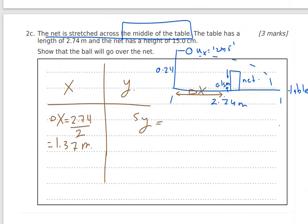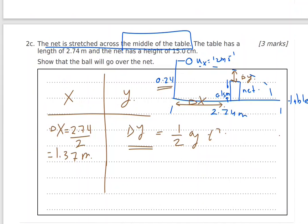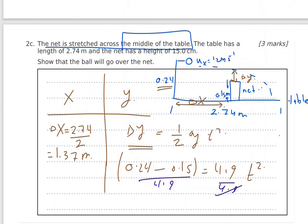We calculate sy in the y-direction. The ball needs to drop from 0.24 m to the net height of 0.15 m, so the vertical drop is 0.24 − 0.15 = 0.09 m. Setting 0.09 = 4.9t² and solving — dividing both sides by 4.9 and taking the square root — gives t = 0.13 seconds.